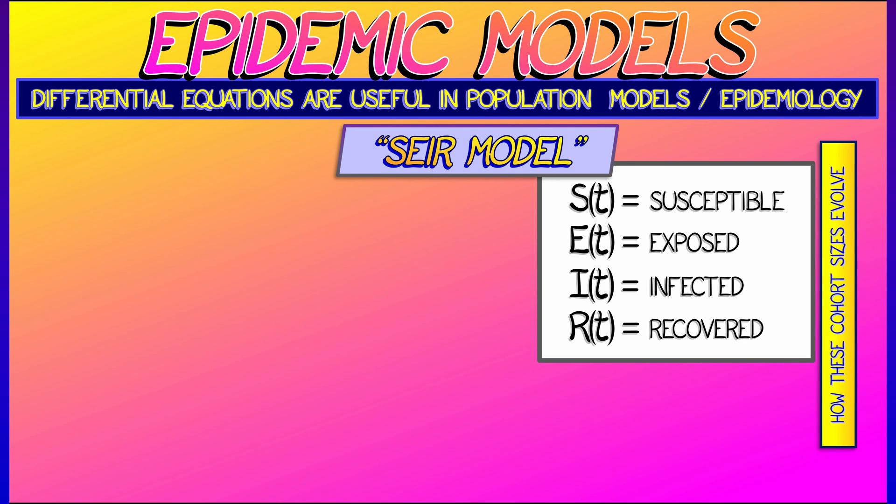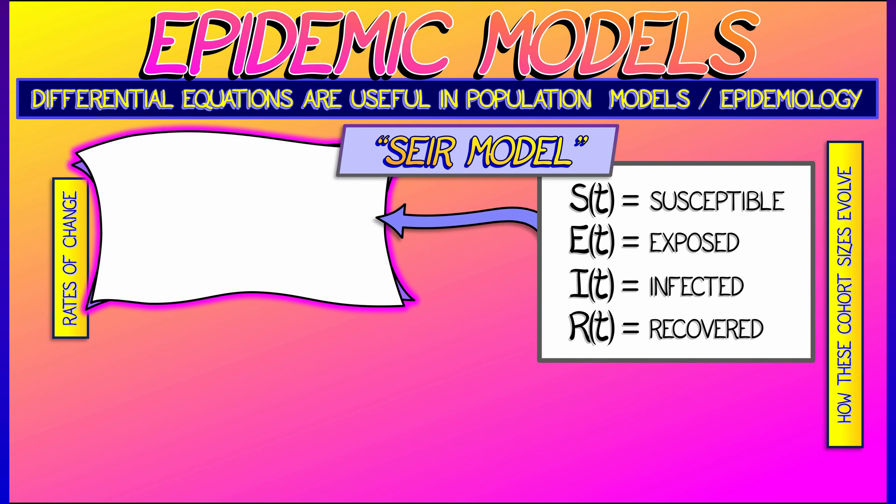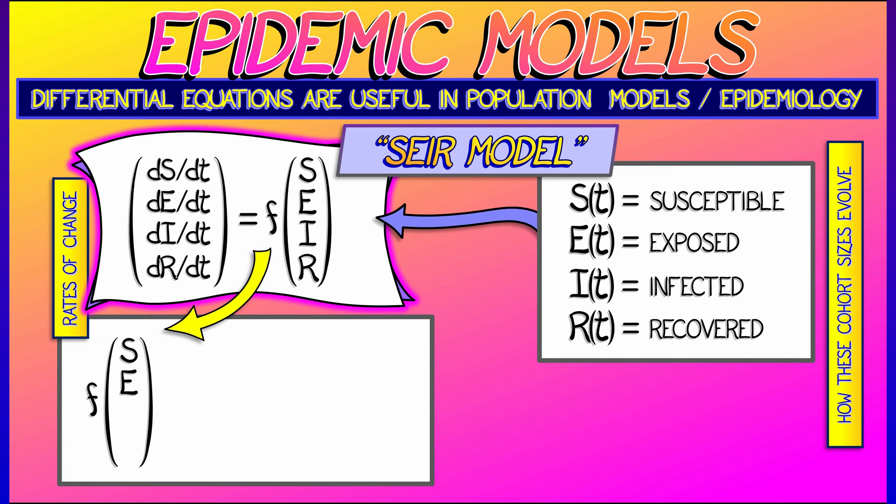Now, the S-E-I-R model is a model for how these evolve over time. This uses differential equations and says that dS-DT, dE-DT, dI-DT, and dR-DT are all some function of the population sizes, S-E-I and R.